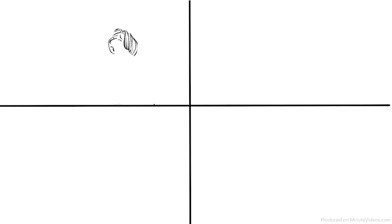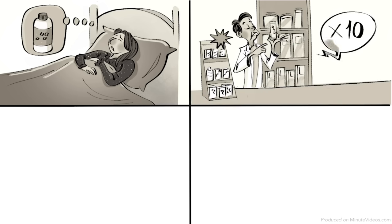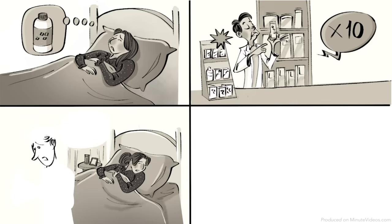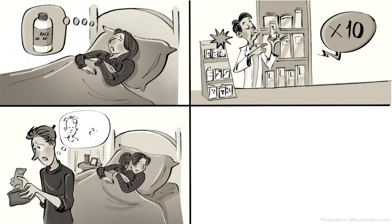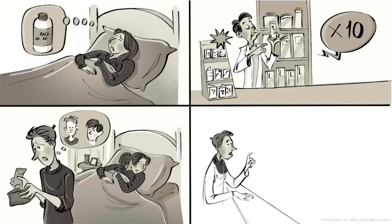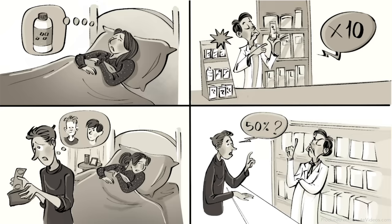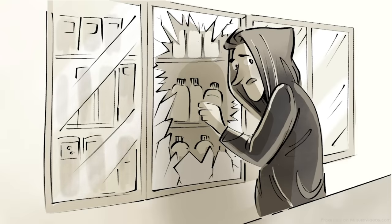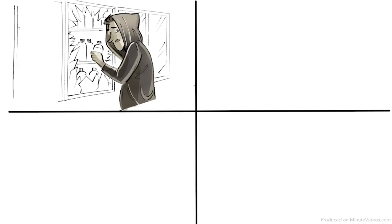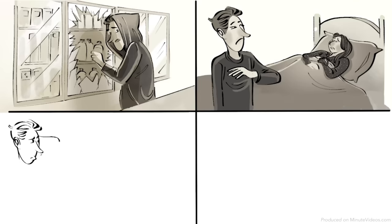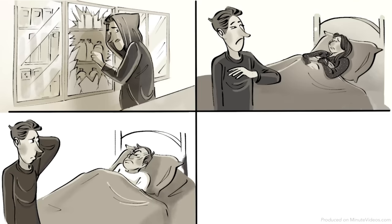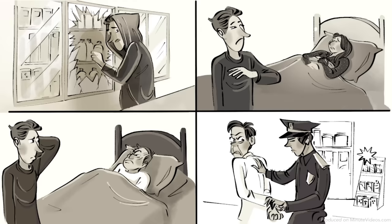The Heinz Dilemma: A woman was on her deathbed. There was only one drug that the doctors thought might save her. The druggist who made that particular medicine sold it for ten times the price of the production costs. The sick woman's husband, Heinz, was poor and could not afford to buy the drug, not even with the financial help of his friends. Heinz asked the pharmacist to sell it to him for half the price, but he refused. To save the life of his wife, Heinz broke into the man's laboratory and stole the medicine. Should Heinz have stolen the drug? Would it change anything if Heinz didn't love his wife? What if the person dying was not his wife, but a stranger? Should the police arrest the druggist for murder if the wife had died?